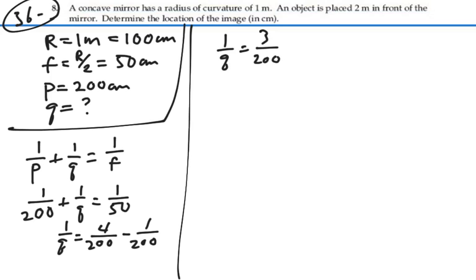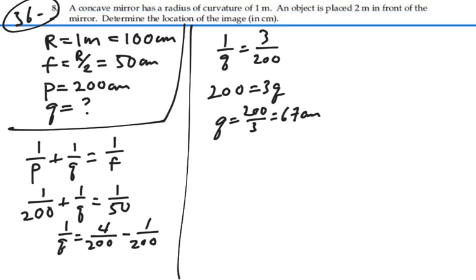That gives 3 two-hundredths, so 200 is equal to 3q. Or q is equal to 200 divided by 3, which is 67 centimeters. So that is our image distance. It's positive, which means that it's on the side of the outgoing rays, and hence we'll have a real image.